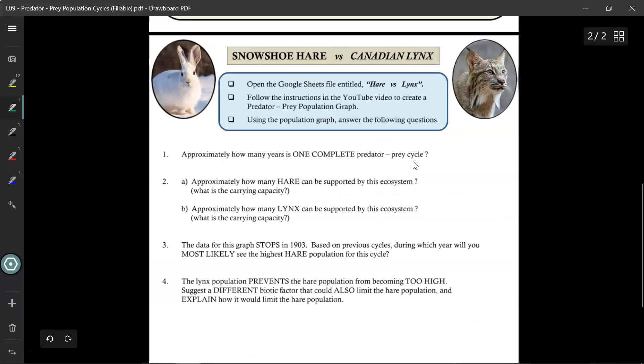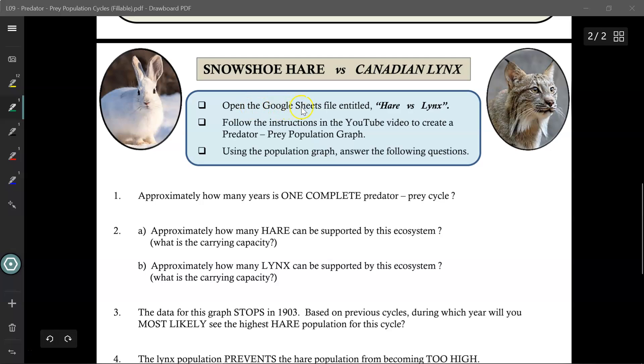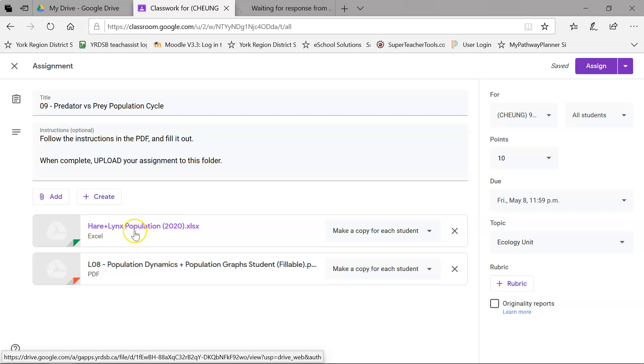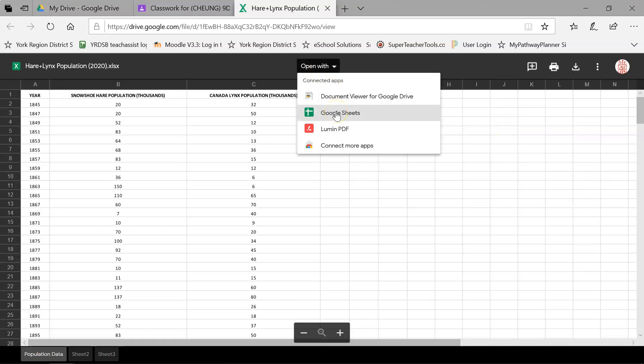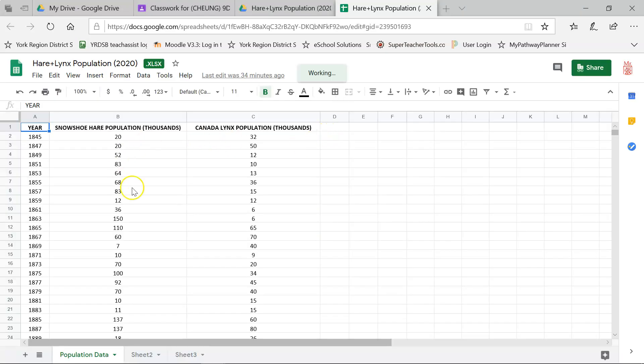What I want you to do now is open your Google Sheets file entitled Hare versus Lynx. In the assignment folder, click on the file. You won't be able to do much here, so click on the three dots and choose Open in a new window. Now choose Open with Google Sheets. Here we have some data from the Hudson Bay Company regarding year versus the snowshoe hare population in the thousands and the Canada Lynx population in the thousands. We're going to create a predator-prey population graph using this data.